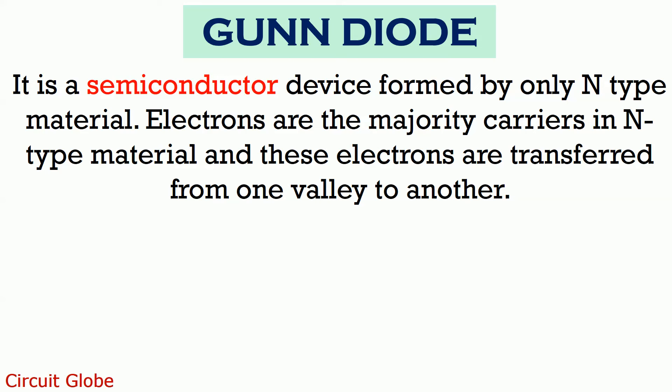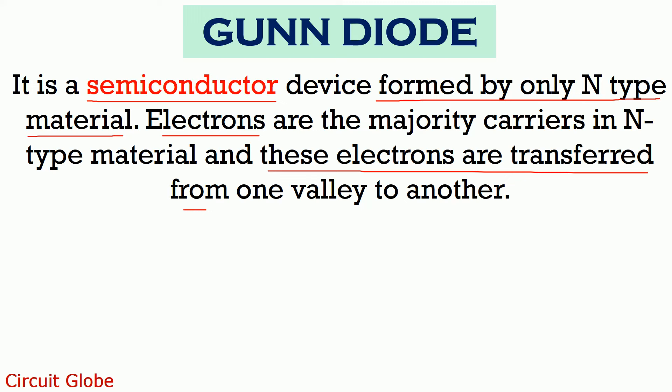A Gunn diode is a semiconductor device that is formed by only N-type material, as no P-type semiconductor material is used at the time of its fabrication. Thus the flow of majority carriers of N-type material, that is electrons, generates current through the device. These electrons are transferred from one region to another, thus these are also known as transferred electron devices.